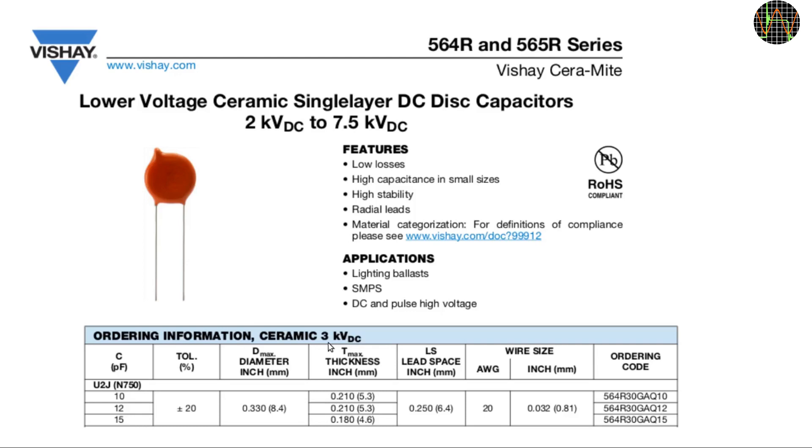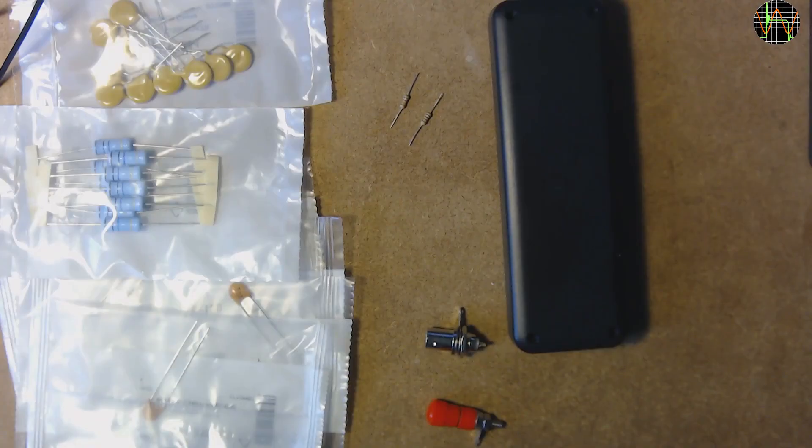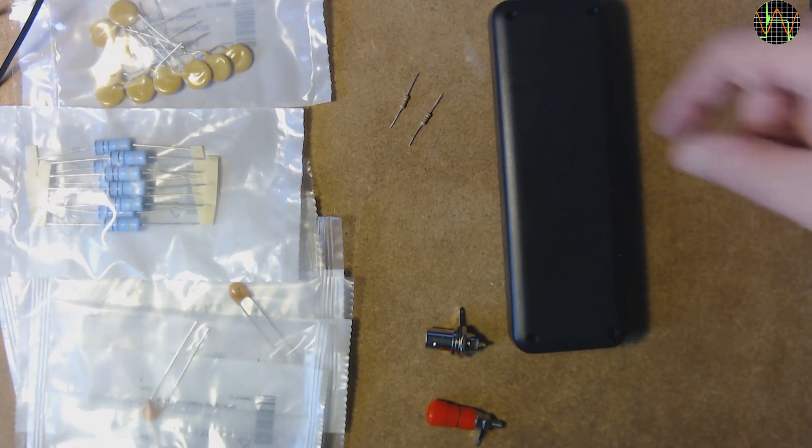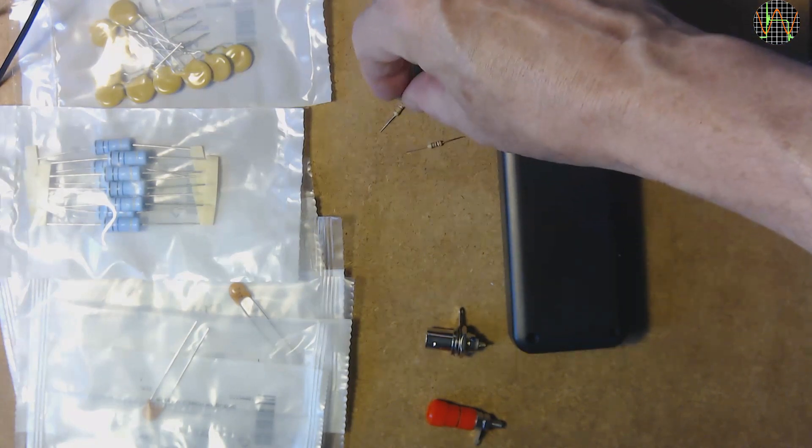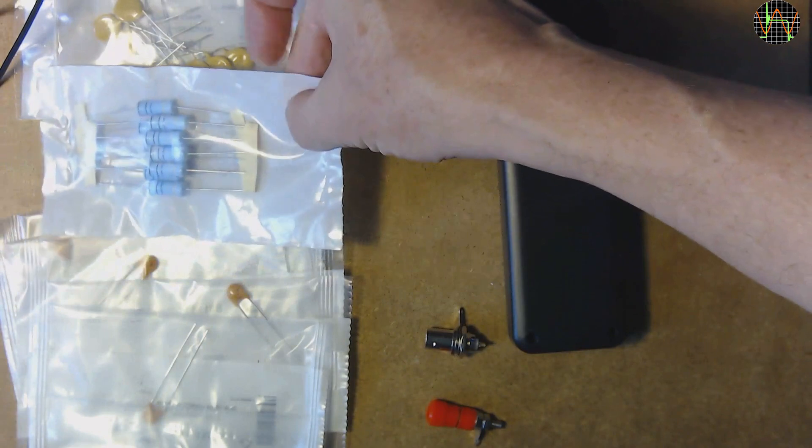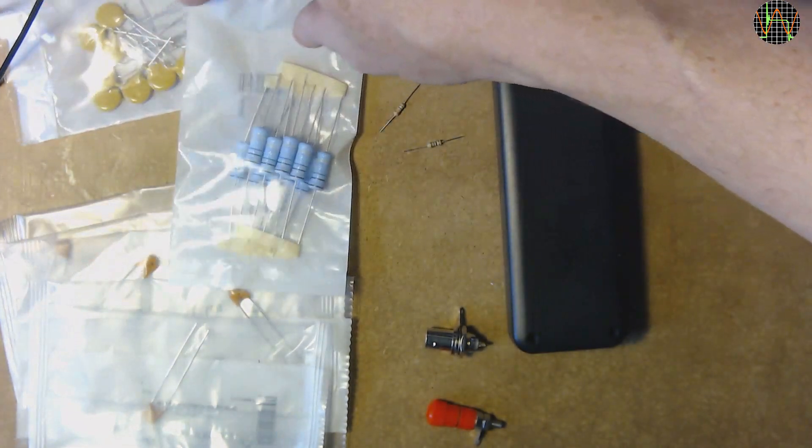All these calculations are kind of theoretical as the only capacitors I could get have a rather large tolerance of plus minus 20%. Here then is everything needed. At the bottom left are the high voltage caps in individual bags. The normal sized 56k and 1MΩ resistors are tiny compared to the 10MΩ high voltage monsters.